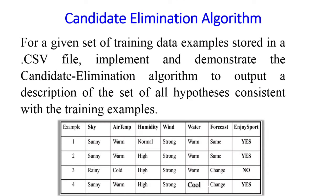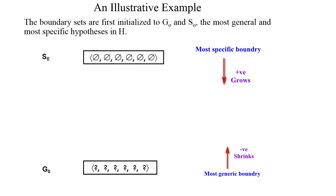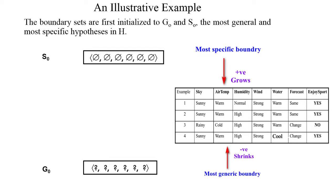We will consider the same example as in the Find-S algorithm: the 'enjoy sport' training data. There are two terms: S0 and G0. S0 indicates the most specific boundary, initialized with all null values, which grows and takes positive samples only. G0 indicates the most generic boundary, initialized with all question marks, which takes only negative samples and shrinks.